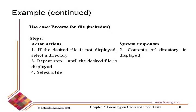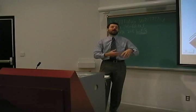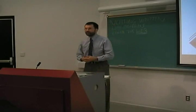The inclusion use case 'browse for file': if the desired file is not displayed, select a directory — you're looking at a list of files. The system displays the contents of the directory. Repeat step one until the desired file is displayed — this is one of those cases where you say 'repeat,' because people do have to repeat something repeatedly. When the 'until' condition is satisfied, select a file. Then from that point, whatever we were doing with that file — opening it, closing it, deleting it — will take place in the use case that includes this.